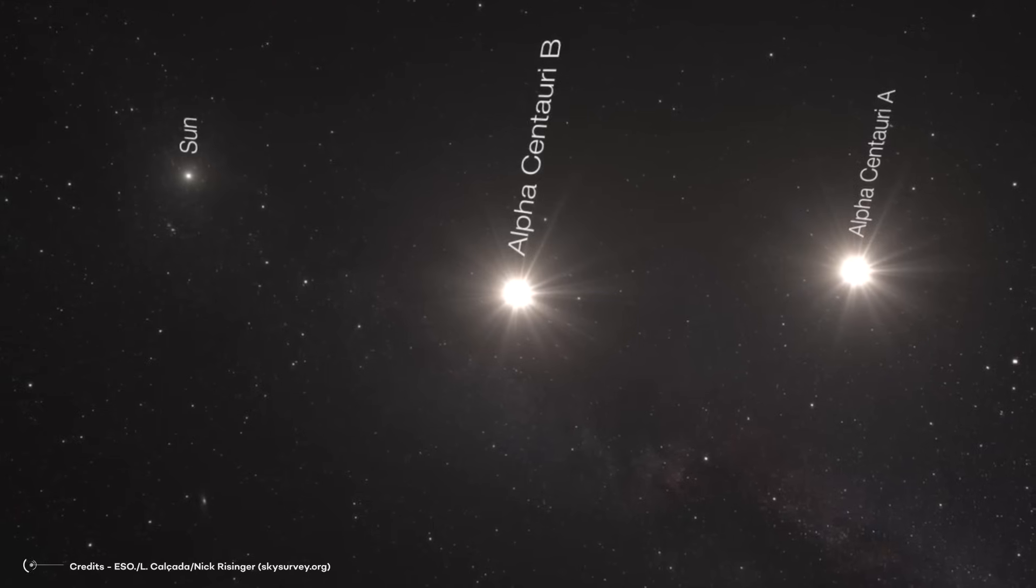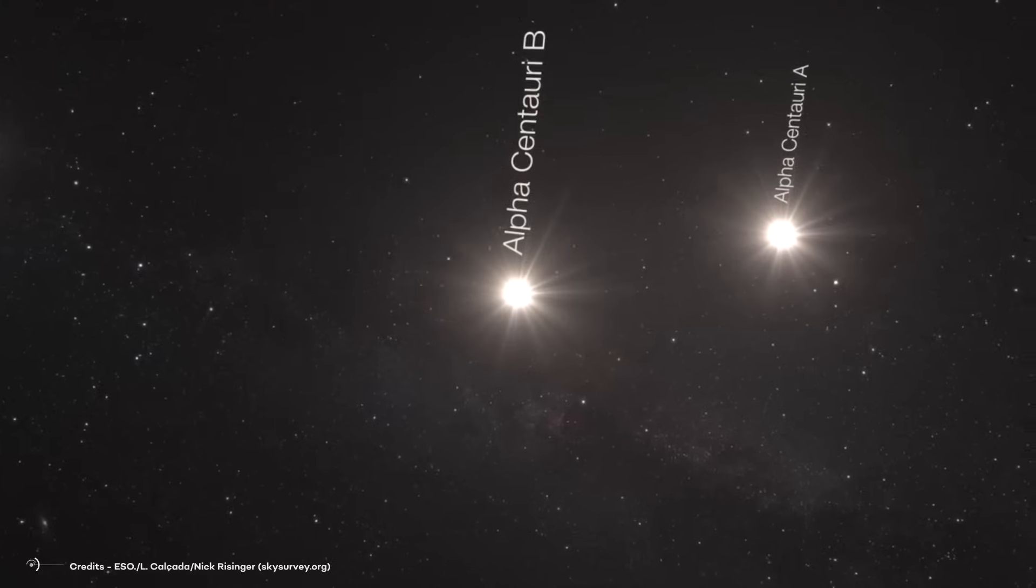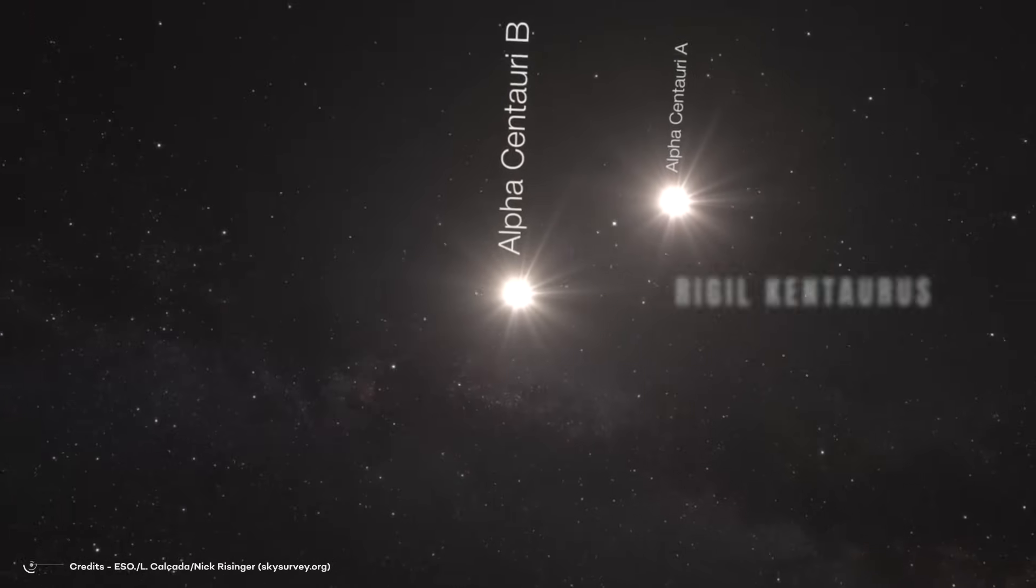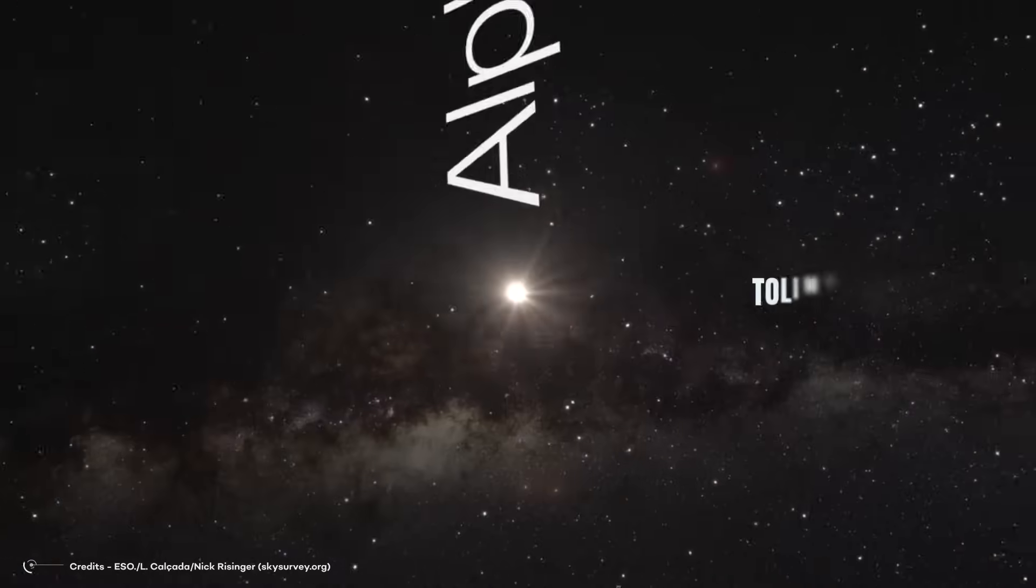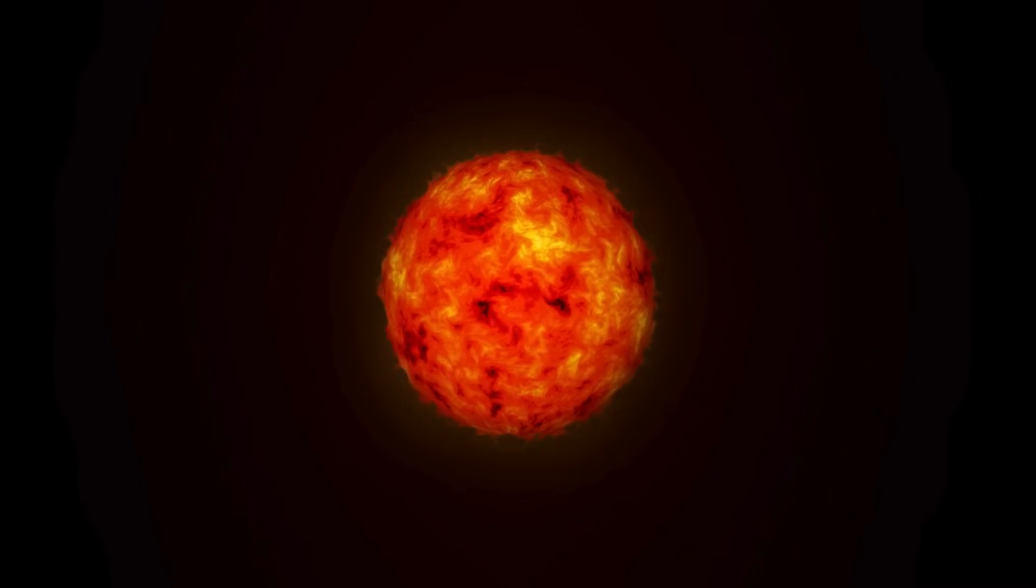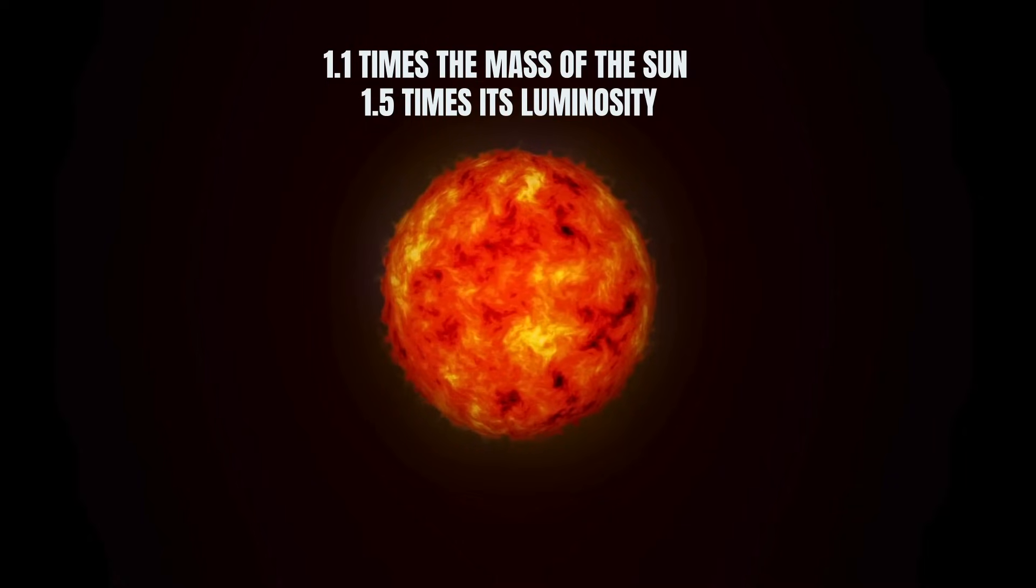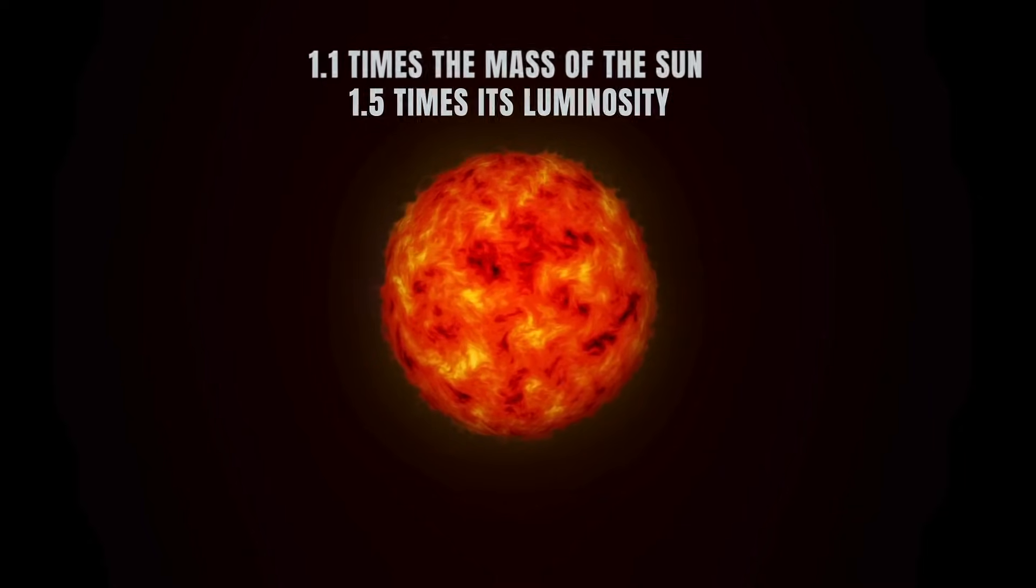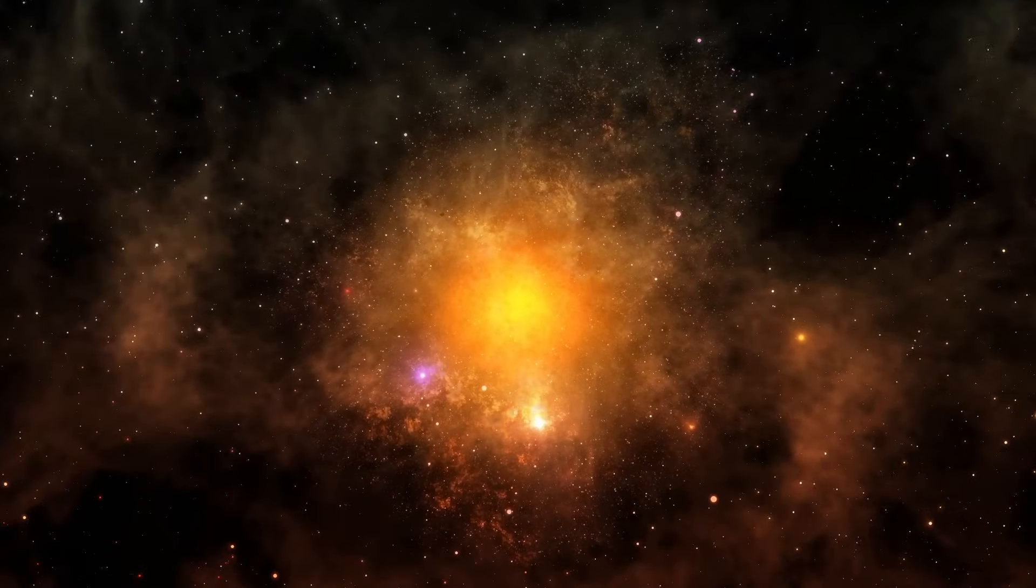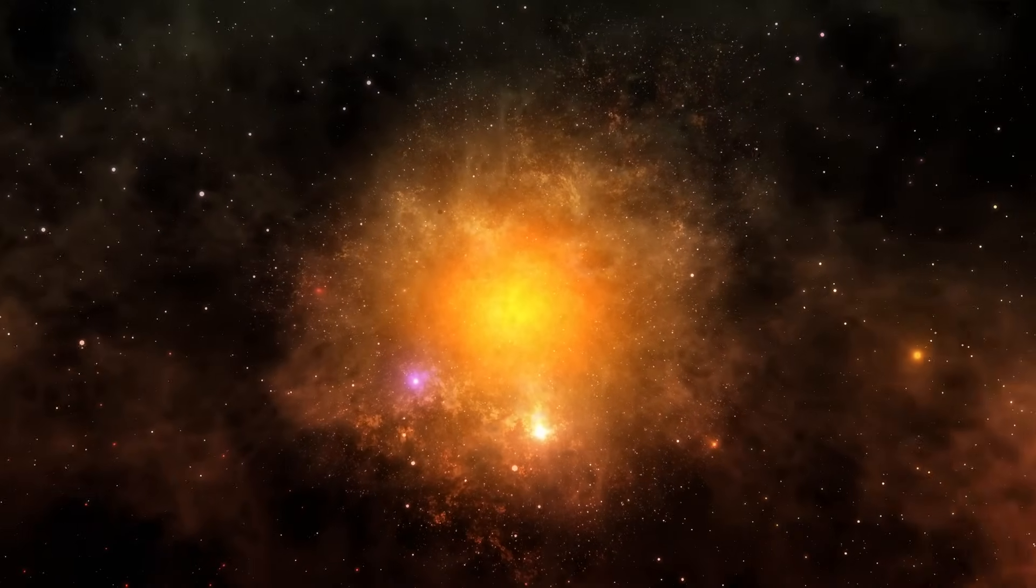Alpha Centauri is a star system of three stars. Alpha Centauri A, also called Rigel Quintaris, Alpha Centauri B, also known as Toliman, and Proxima Centauri. Quintaris is the system's central star. This star is 1.1 times the mass of the Sun and 1.5 times its luminosity. Toliman is the second most prominent star in the system, since it only has 0.9 of the mass of the Sun.